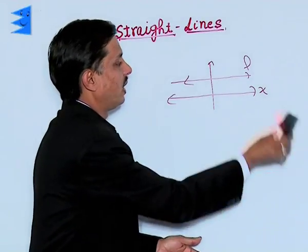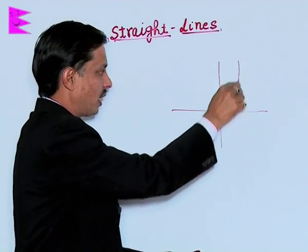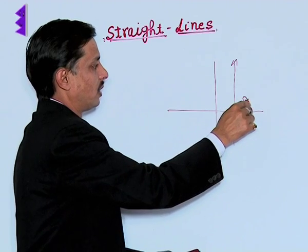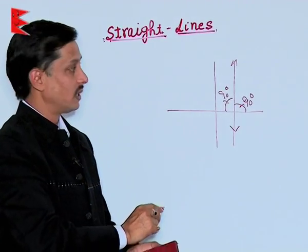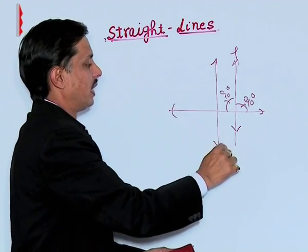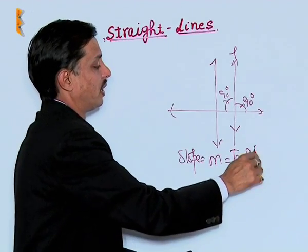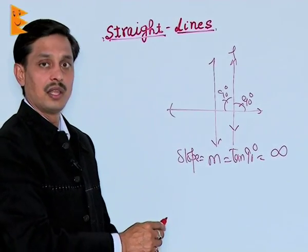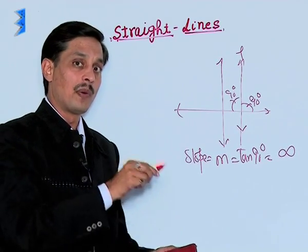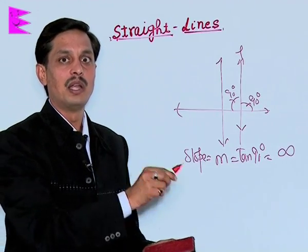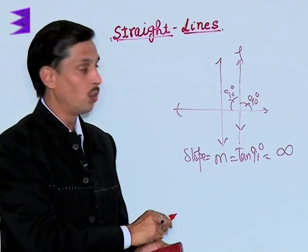If a line is perpendicular to the X-axis, the angle it makes with the X-axis in both positive and negative directions is 90 degrees. So the slope M = tan(90°), which is not defined — infinity. Vice versa: if the slope of a line is 0, the line is parallel to the X-axis; if the slope is infinity, the line is perpendicular to the X-axis.